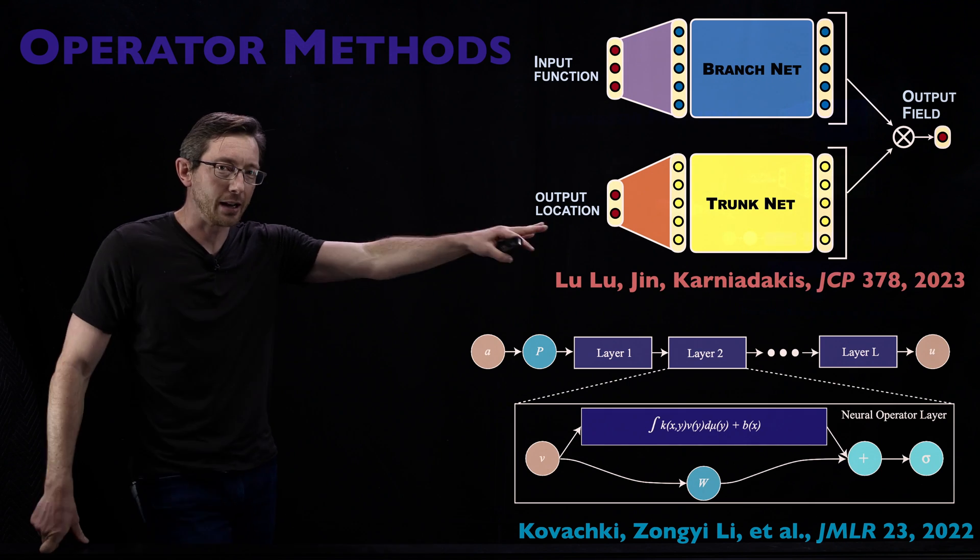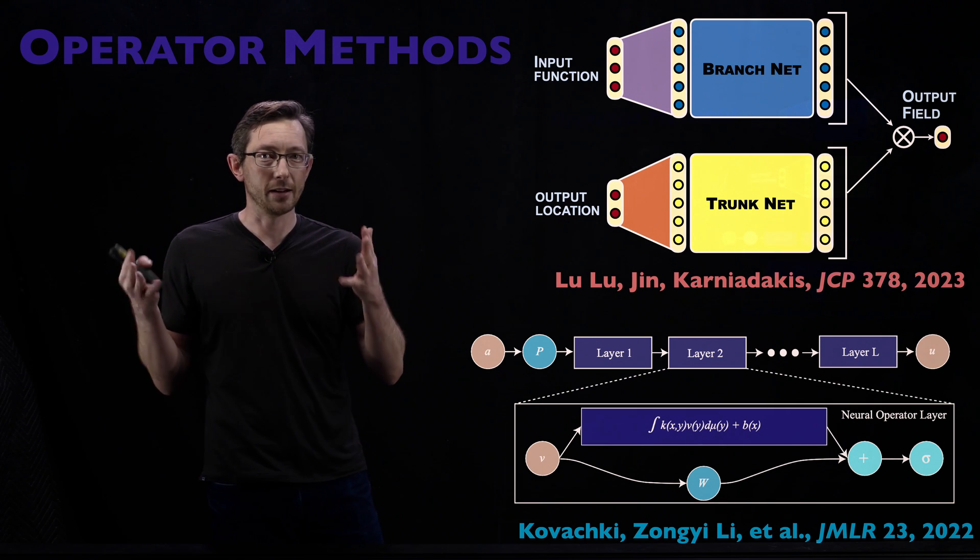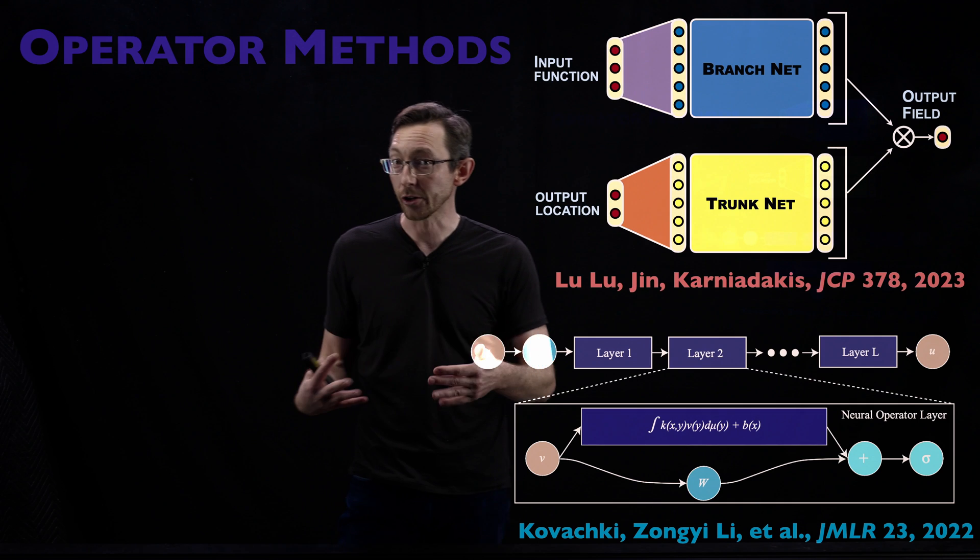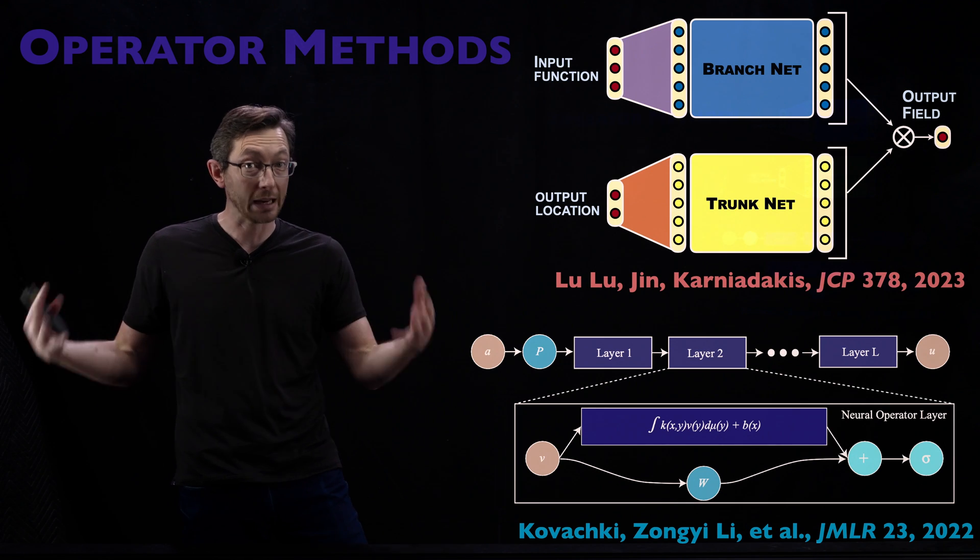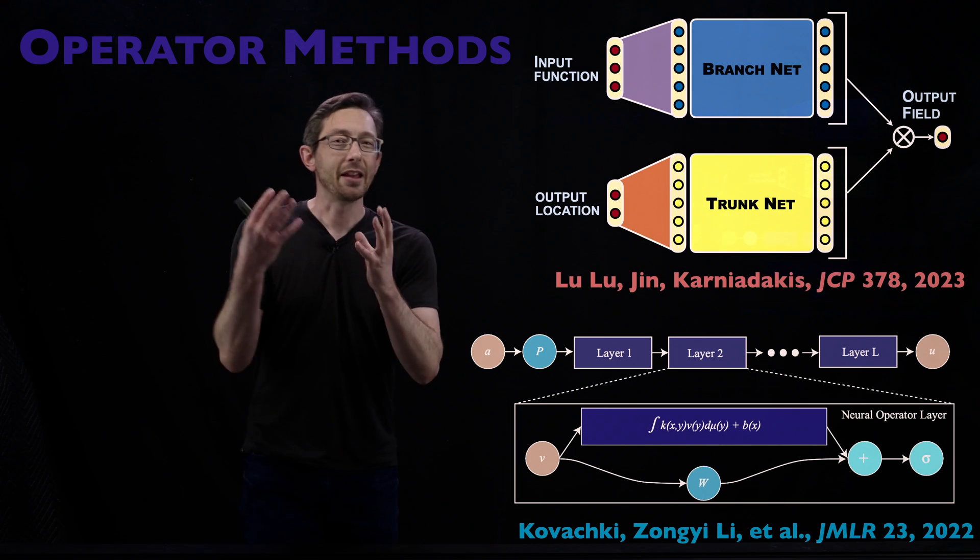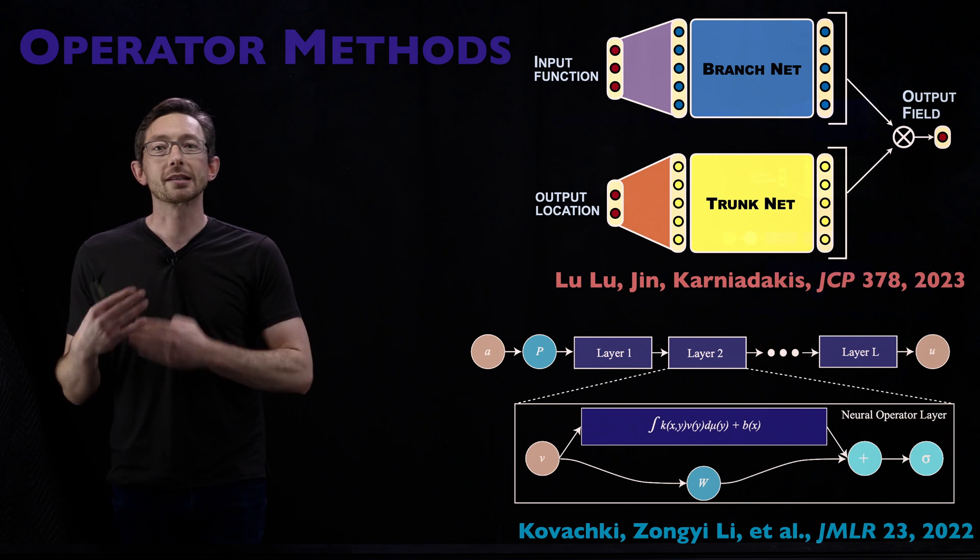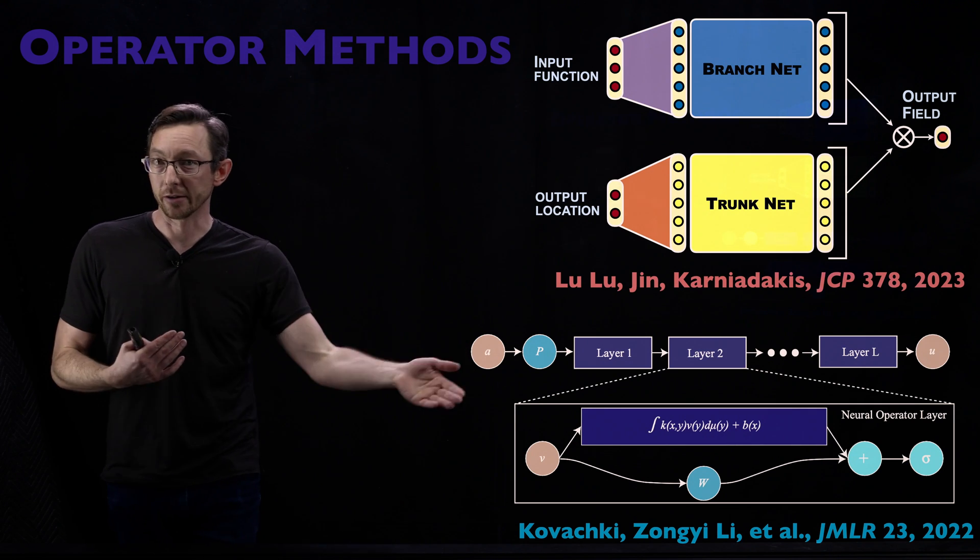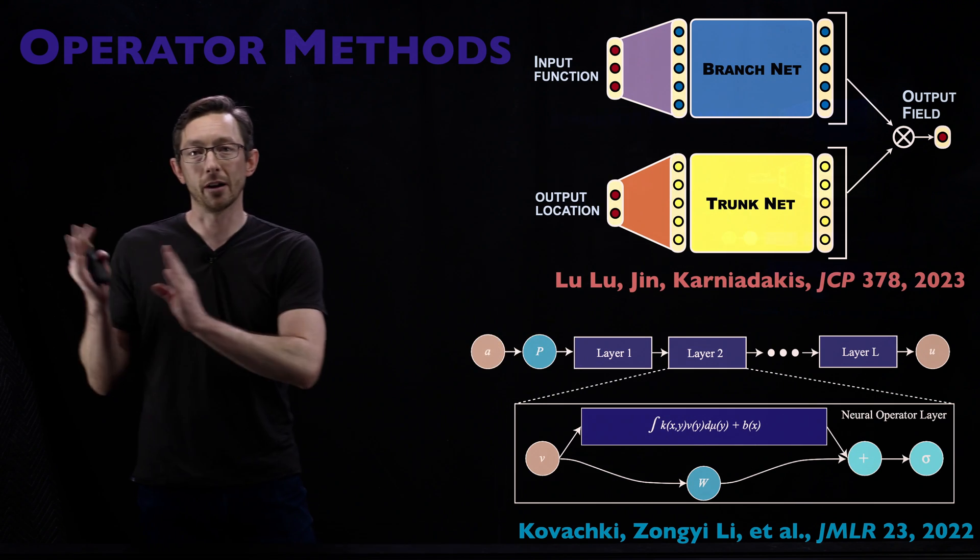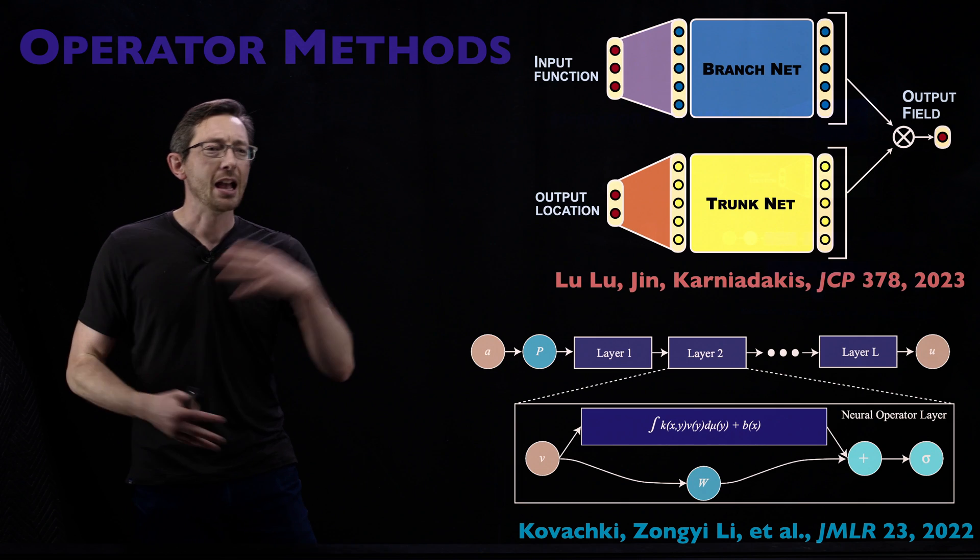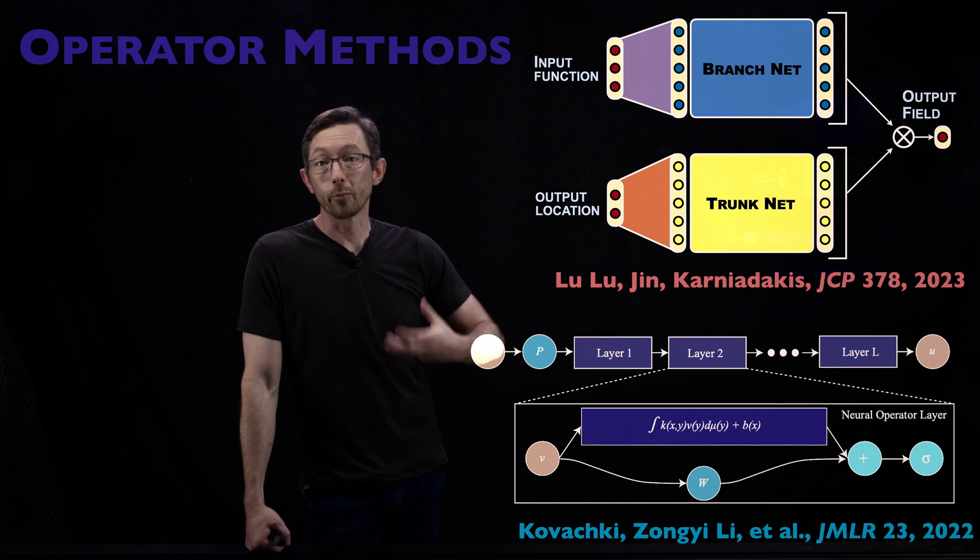Another topic are operator networks. Neural networks are often viewed in the lens that they are universal function approximators, meaning that you can approximate arbitrarily well any generic function with a big enough neural network and enough training data. There's this notion that instead of just modeling a function, an input-output function, neural networks can also model operators that operate on functions. The solution of a differential equation is an operator that might operate on an initial condition or a boundary condition.